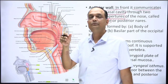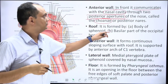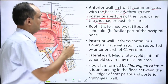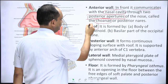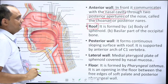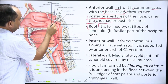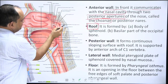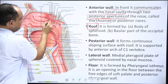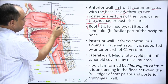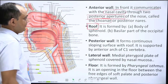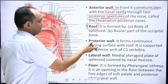The roof of the nasopharynx is formed by bone — mainly the sphenoid bone, with a posterior contribution from the occipital bone. These two bones form the roof of the nasopharynx. Moving to the posterior wall, it forms a continuous sloping surface with the roof.